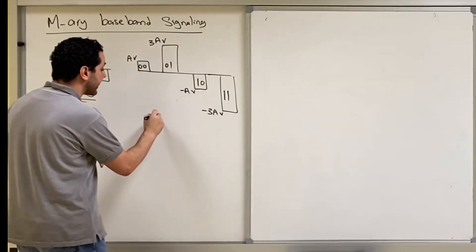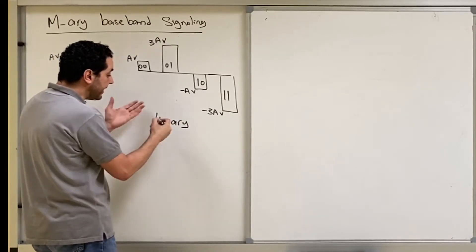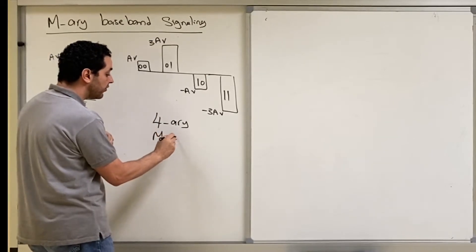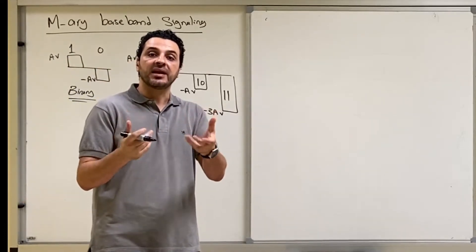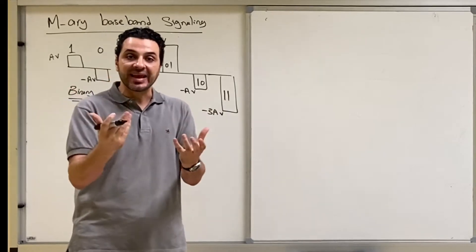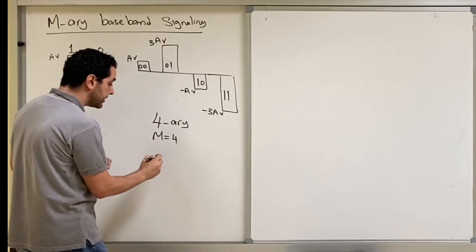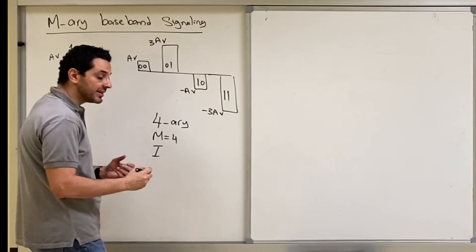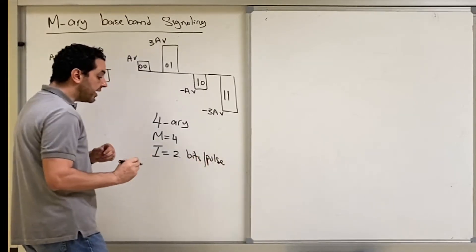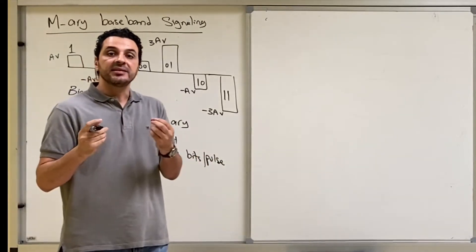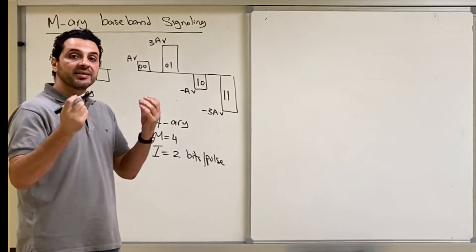This is what we call 4-ary — M-ary communication where M equals 4. M is the number of different pulses that the transmitter and receiver agree on. Since M equals 4, the number of bits per pulse — which we denote as I — will be two bits per pulse. So I equals 2 bits per pulse. This is a new definition and a new notation.